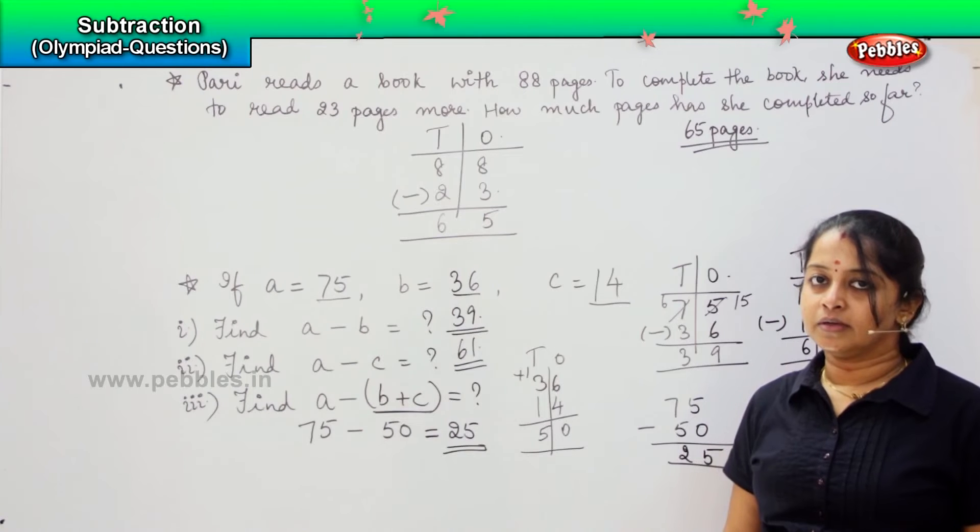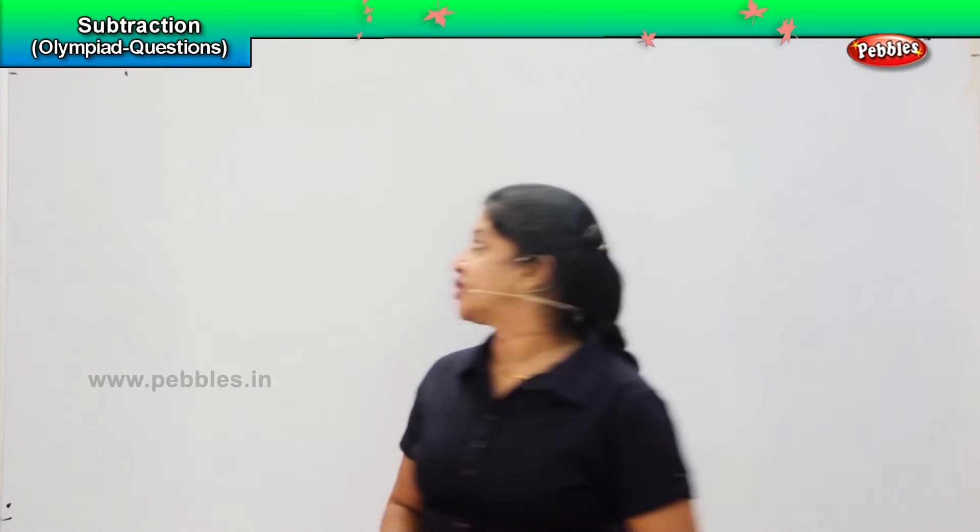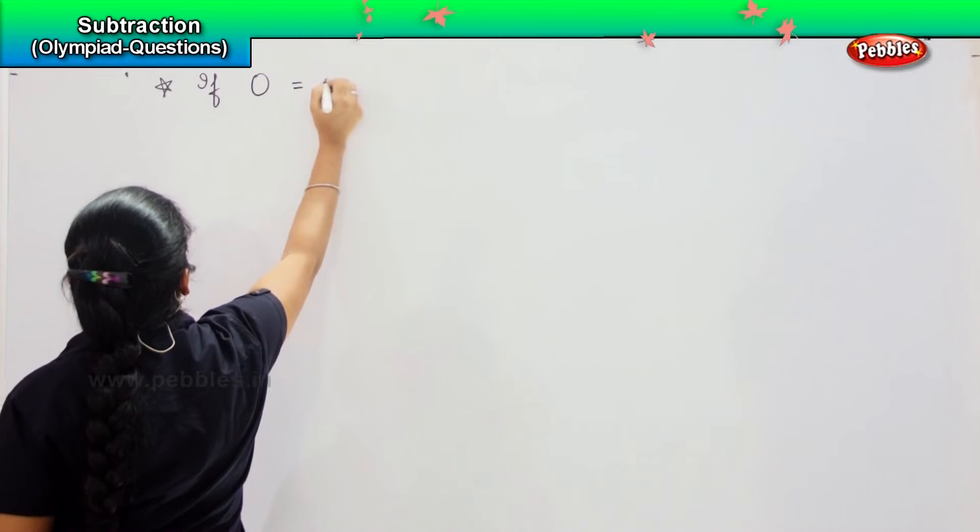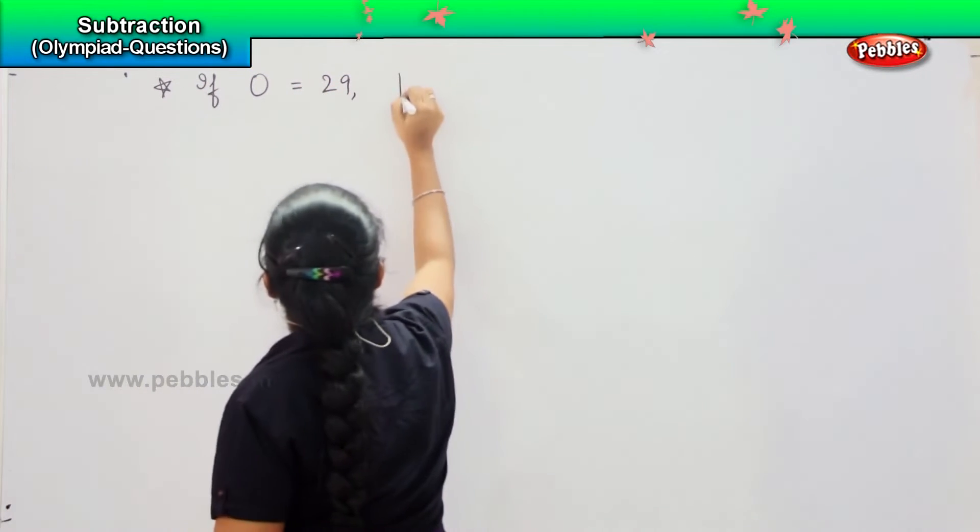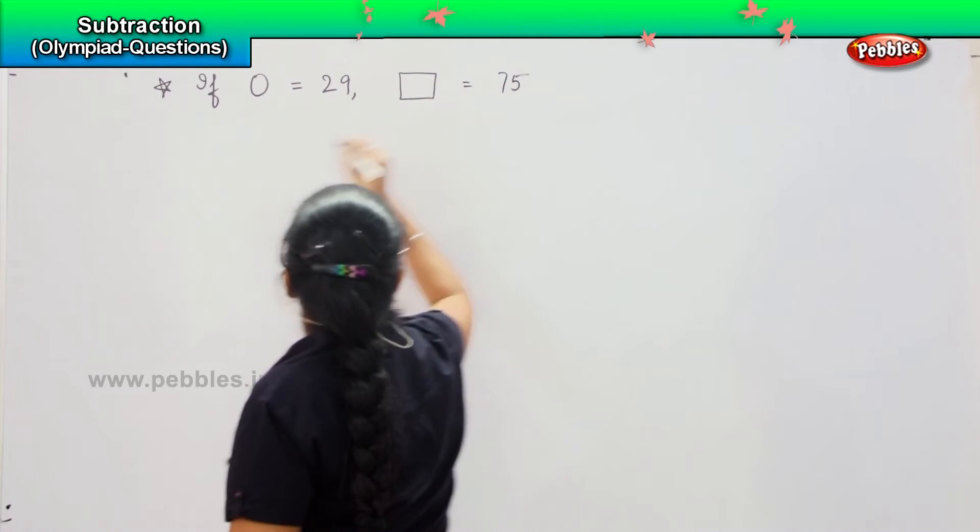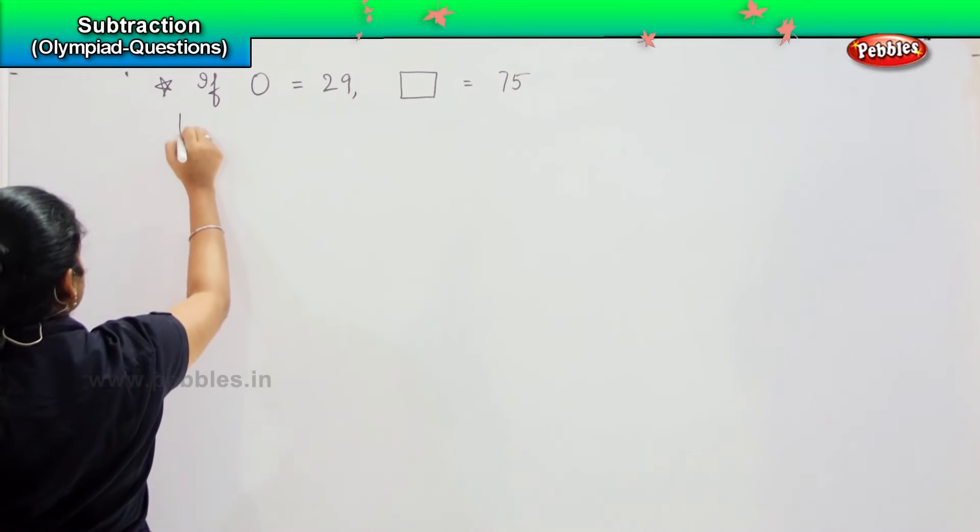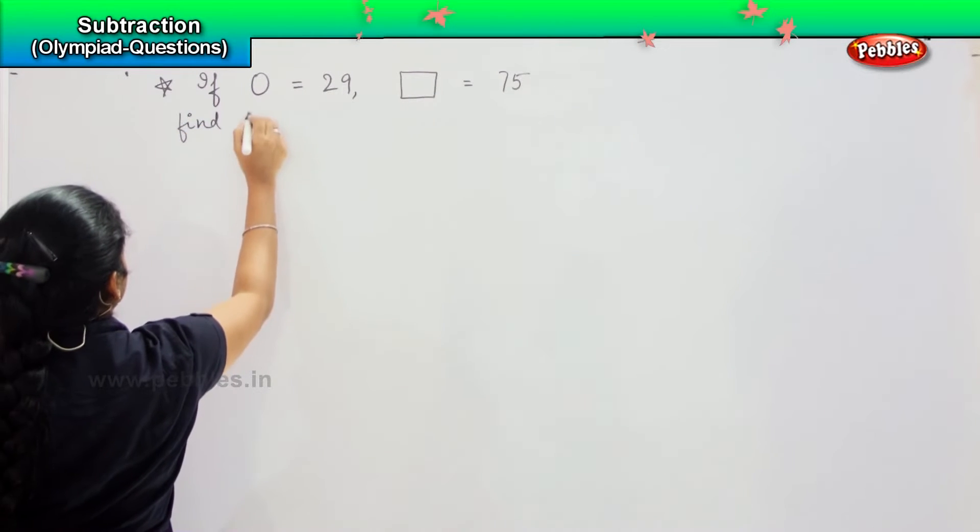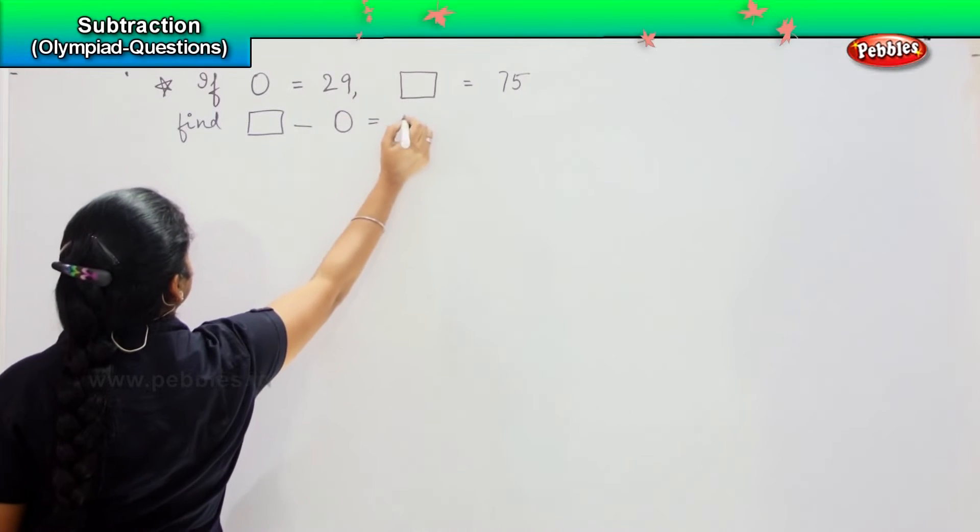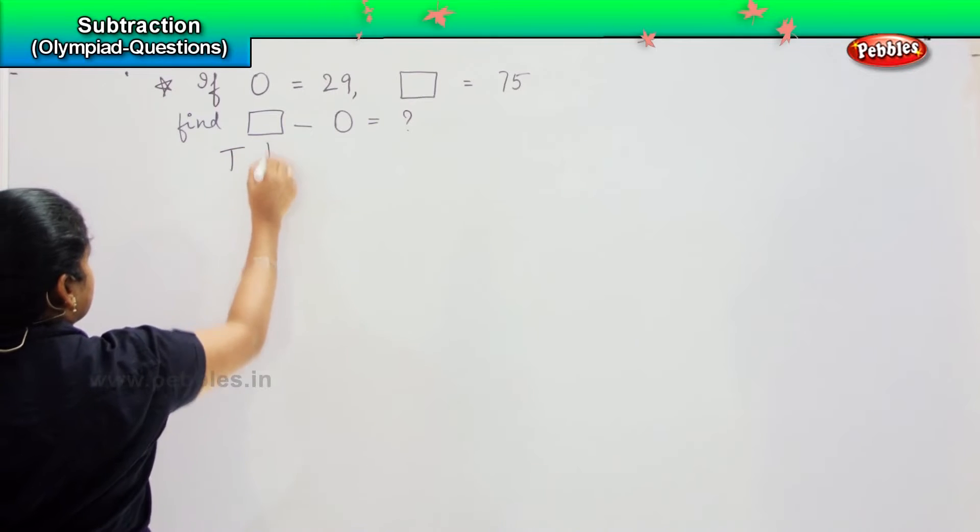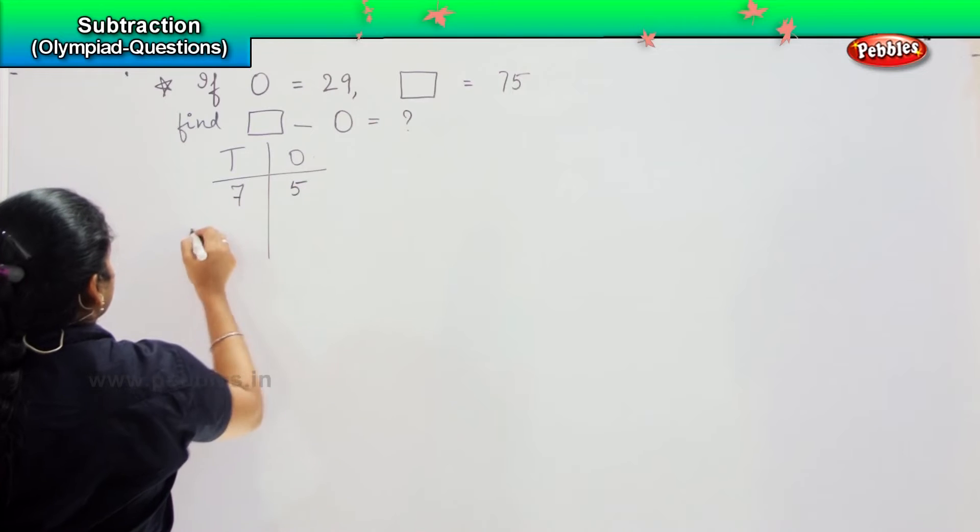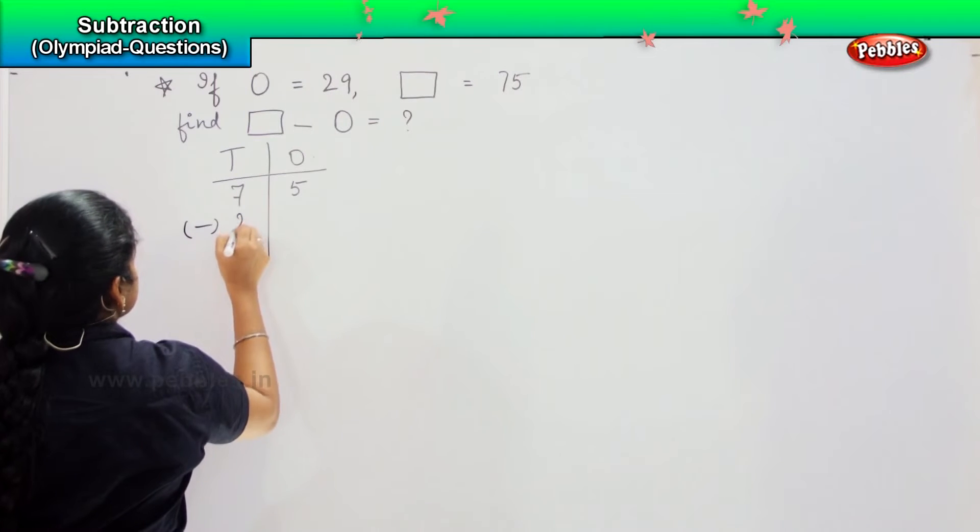Is it clear children? Shall we proceed further? The next question is, if circle is 29 and square is 75, you need to find out square minus circle.